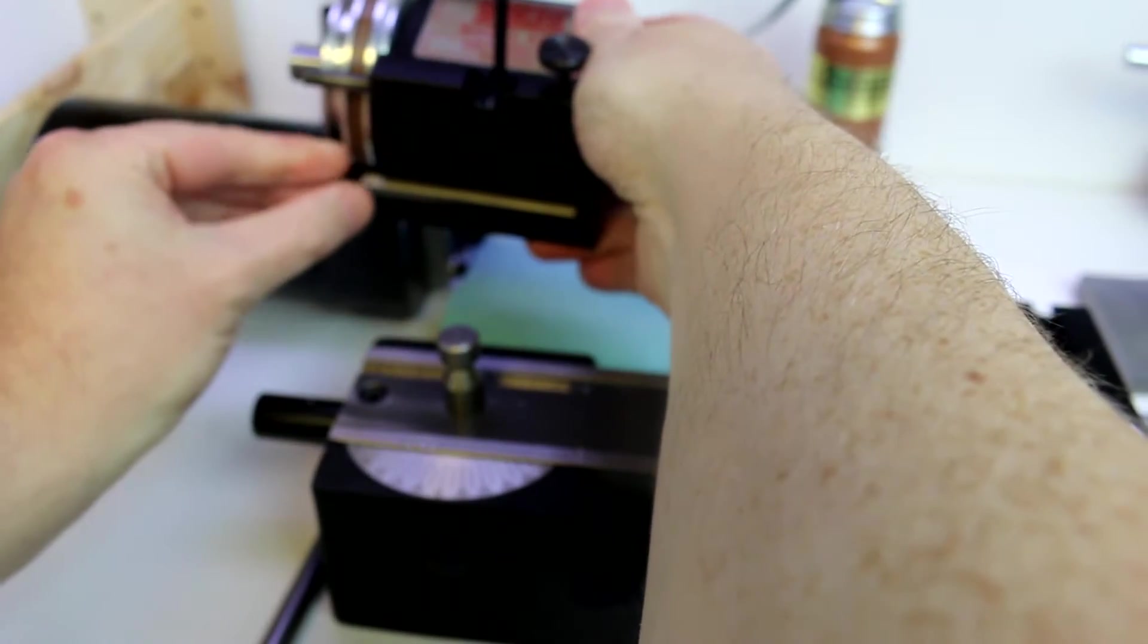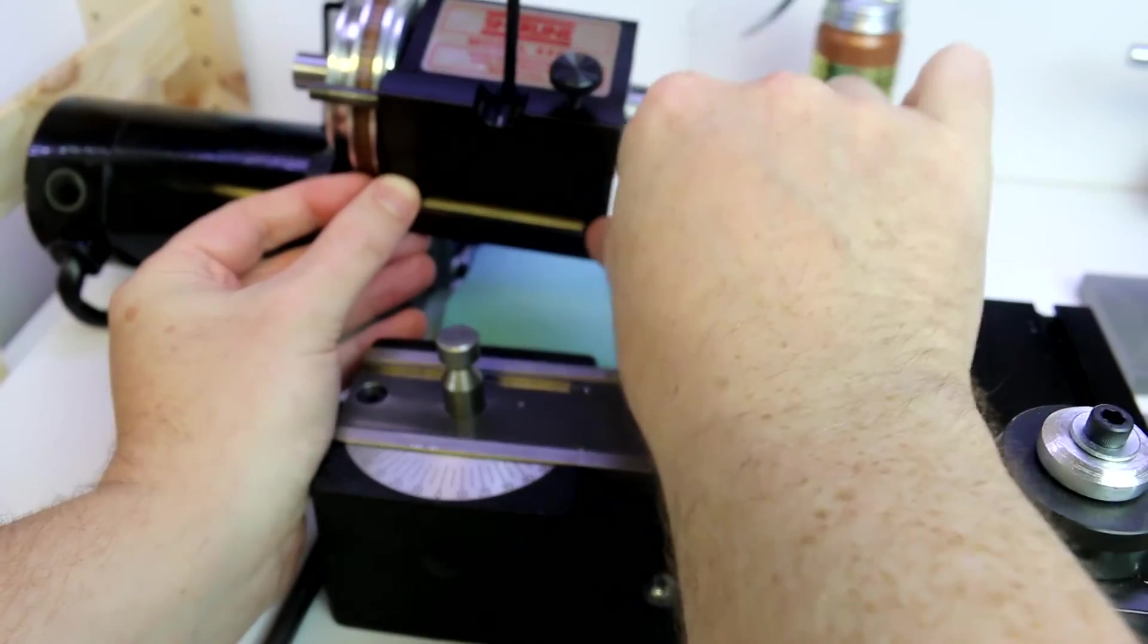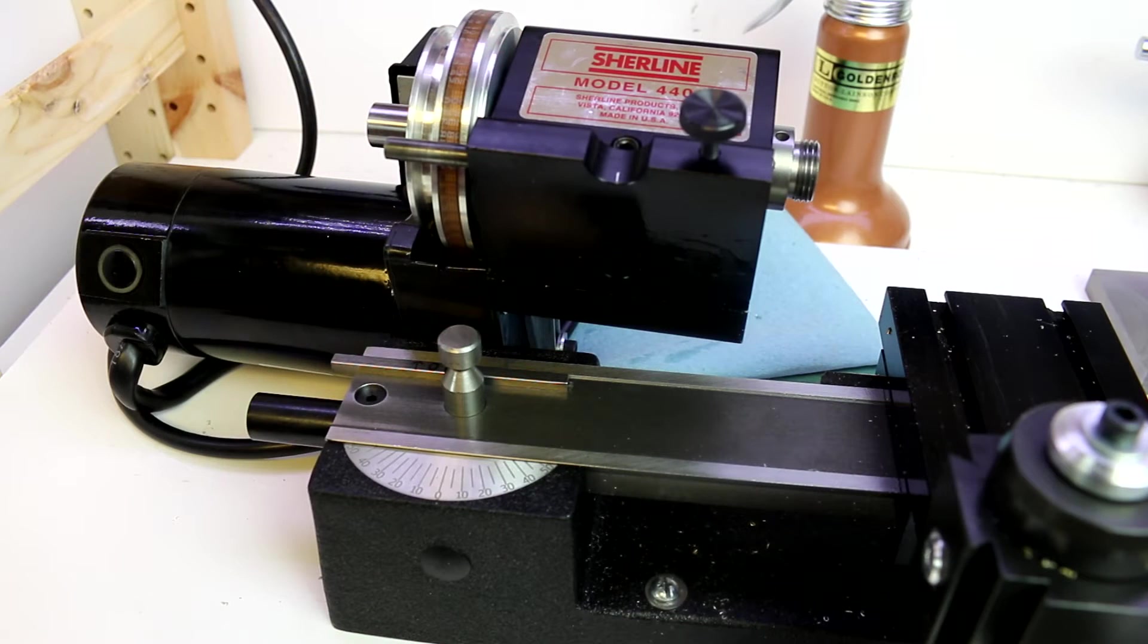So the reason we have to remove the head is there is this alignment key. And that alignment key holds the head fairly square. And at least for me on the first go around, getting that key out was a little bit of a bear.